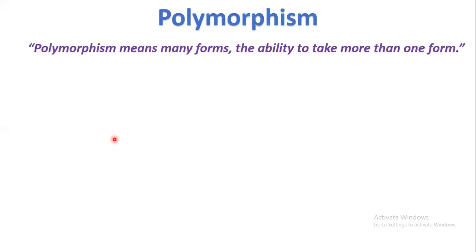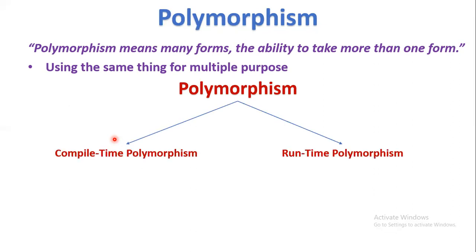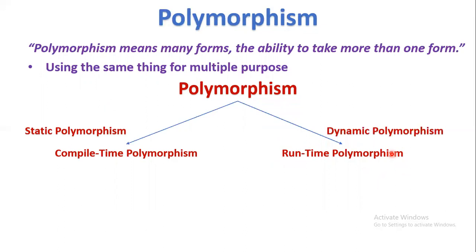The next principle is polymorphism. Polymorphism means many forms — the ability to take more than one form, that is, using the same thing for multiple purposes. Polymorphism is classified into two types: compile-time polymorphism and runtime polymorphism. If the same thing is used for multiple purposes at compile time, that is compile-time polymorphism, also called static polymorphism. If it occurs at runtime, that is runtime polymorphism, also called dynamic polymorphism.